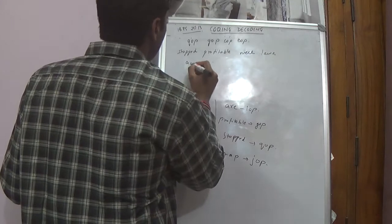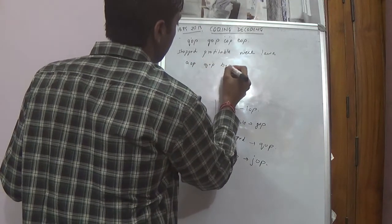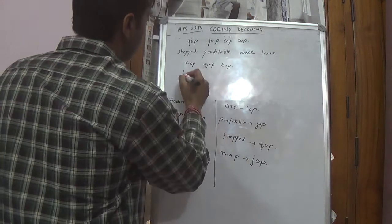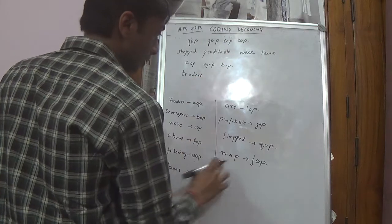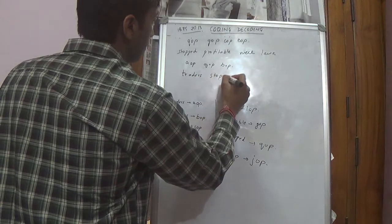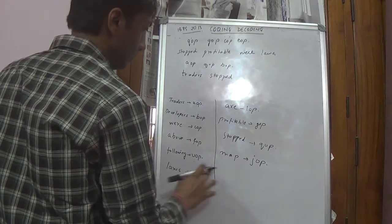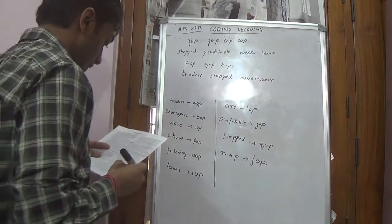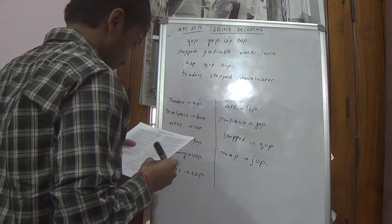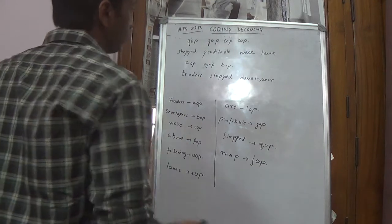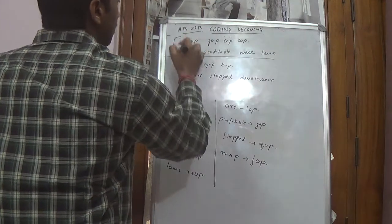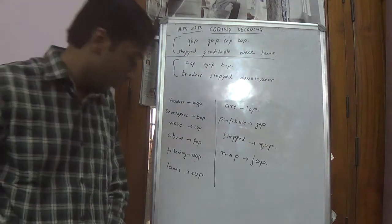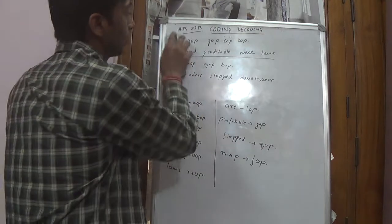Similarly, AOP, QOP, BOP. AOP is traders. QOP is stopped. BOP is developers. So this is option 2. These are very simple questions. This is how the questions we will get in the exam. So it will hardly take 3 to 4 minutes in solving 3 to 4 questions.